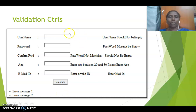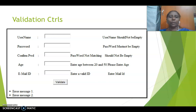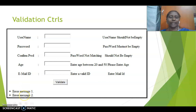This is an example for validation controls. Here you have a text box which deals with username, password, confirm password, age, and email ID. In this example, we have used validation controls for username — username should not be empty — and password should not be empty. We are using compare validator for password and confirm password. The age limit is 20 to 50, where we use range validation. Finally, email ID uses regular expression validation. The error messages shown are handled by the validation summary. Likewise, you can use all the validation controls to create validations in your ASP.NET websites.